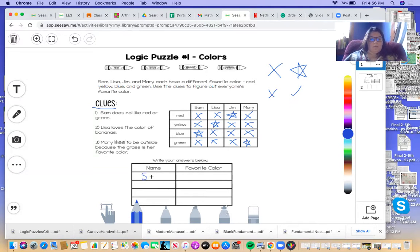So you can just rewrite it here. You can put Sam and red. That way there's no confusion because sometimes these little boxes can get kind of hard to read. And then Lisa, she likes yellow. So on and so on.